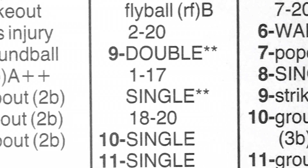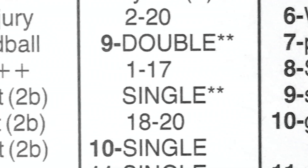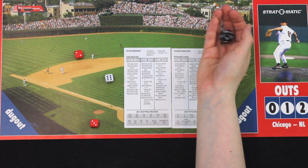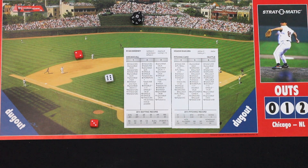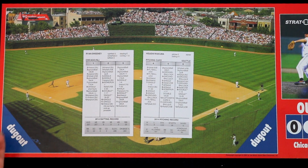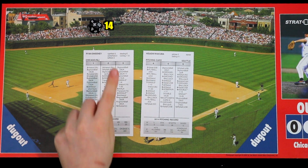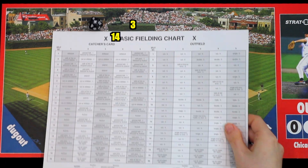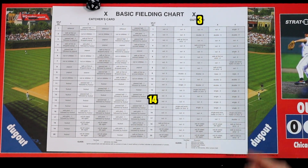Some card readings will need an additional roll. If the result shows a split, roll the 20-sided die for the final result of the at-bat. If the result is a ground ball X, fly ball X, or catcher's card X, roll the 20-sided die, check the fielder's one through five defensive rating, and find the final result on the basic fielding chart.